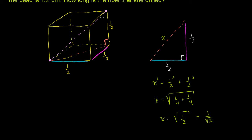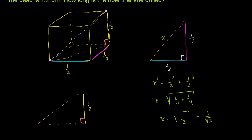Now if we draw the right triangle where the hypotenuse is the length of the hole, we have our hypotenuse — the long diagonal — and one side of length 1½ centimeters, which is the height of the cube, and then the side we just figured out, x, which is 1 over the square root of 2 centimeters. This side over here forms a right angle.